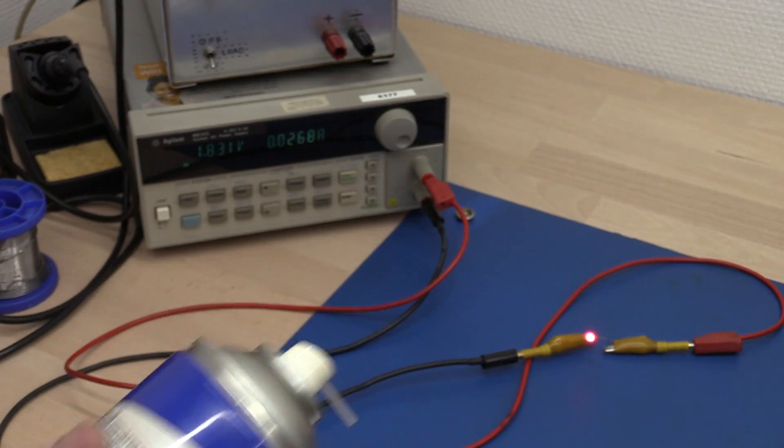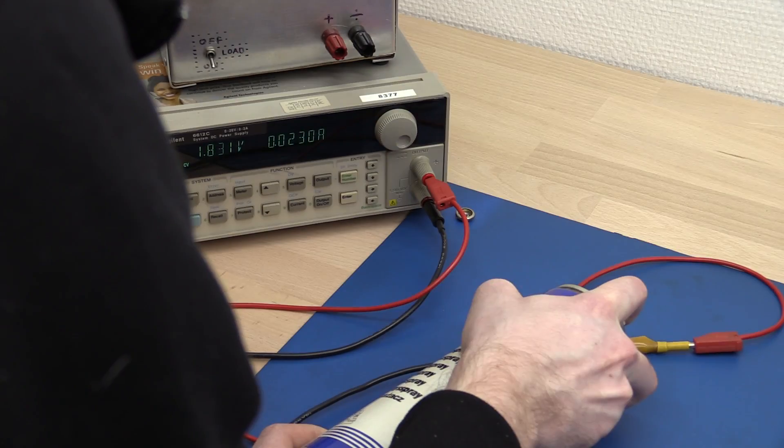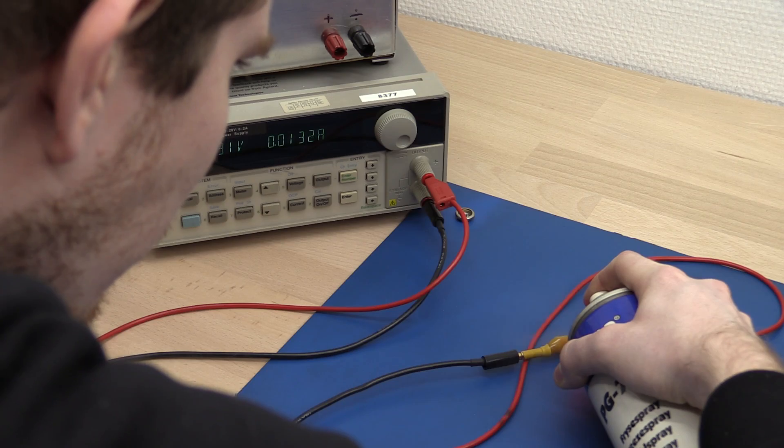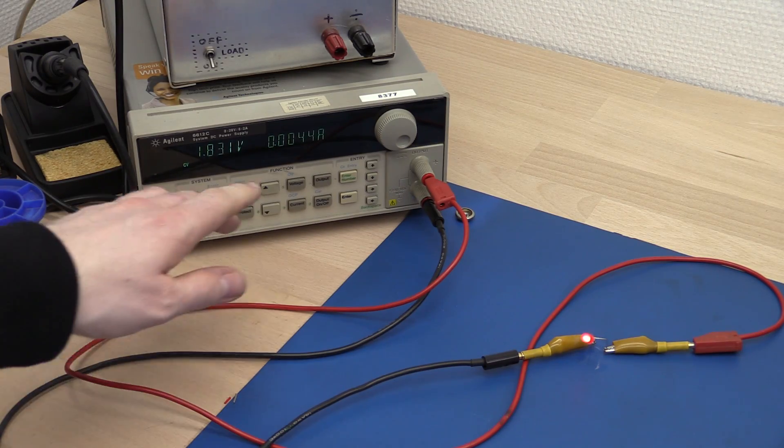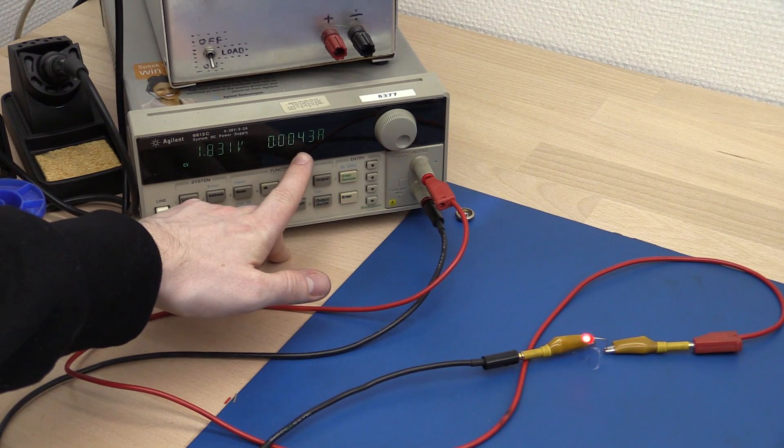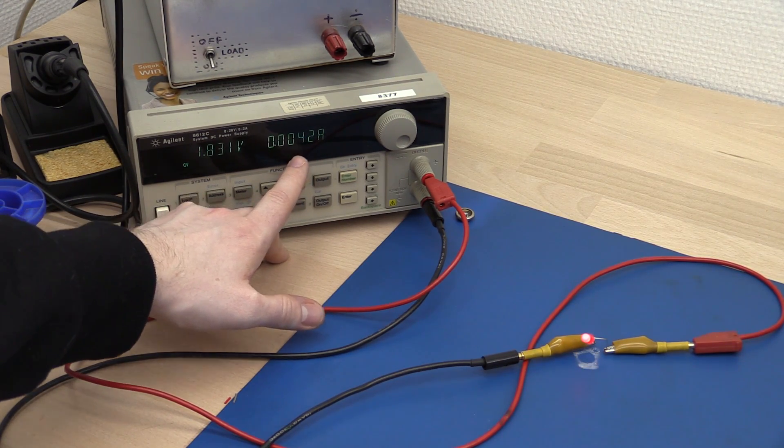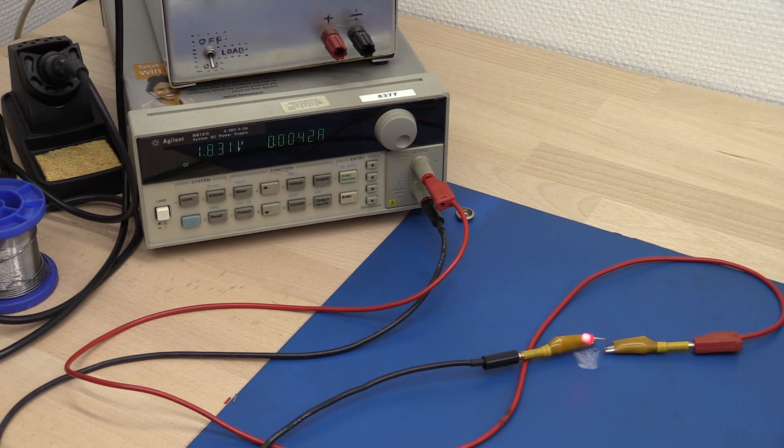So, say we are in a cold environment, and I will freeze this down. And as it gets colder you can see the current is dropping. It's the same voltage, but now we are at 4 milliamps.